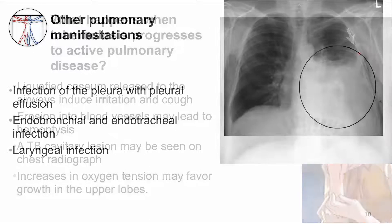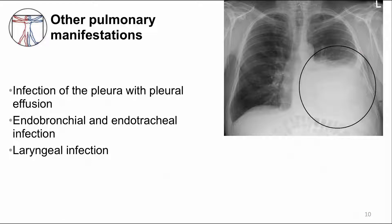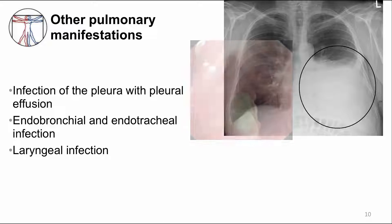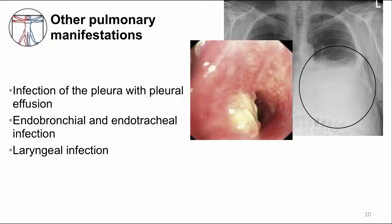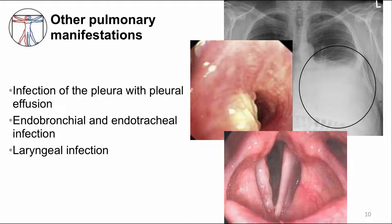Pulmonary TB disease can also progress to other clinical findings in later stages. For example, infection of the pleura can result in large pleural effusions, as you can see in this chest x-ray. Endobronchial and endotracheal infections can occur as MTB is released into the airway, and you can see one of the lesions in this image. Higher up in the airways, laryngeal infection can occur rarely.